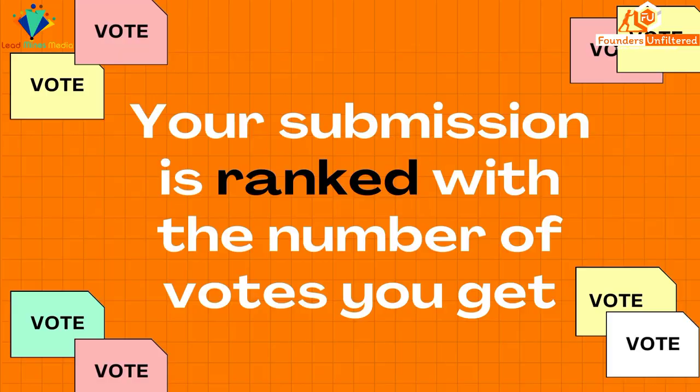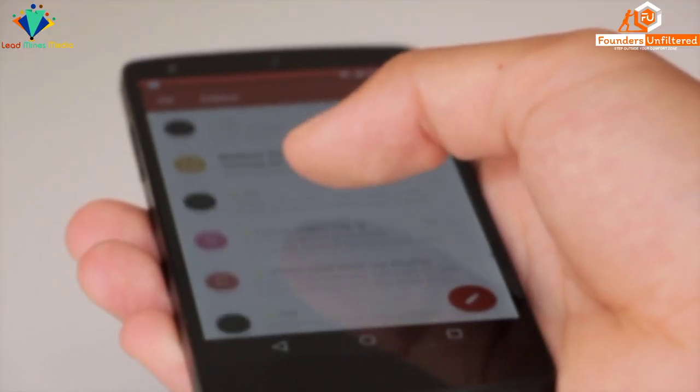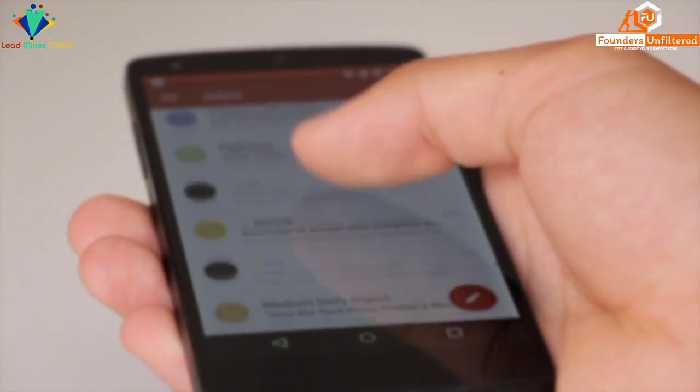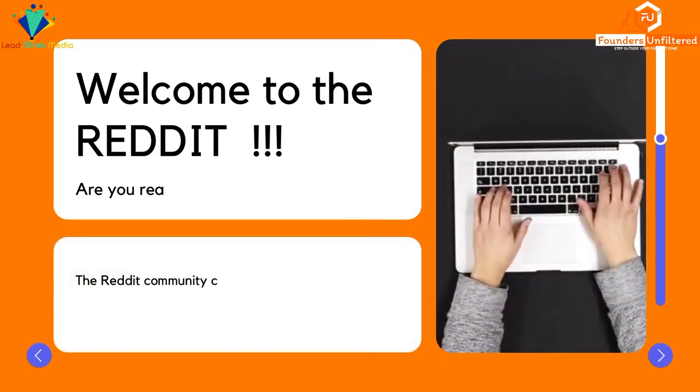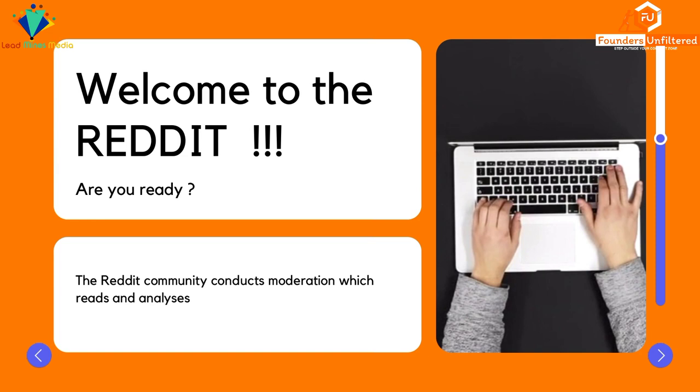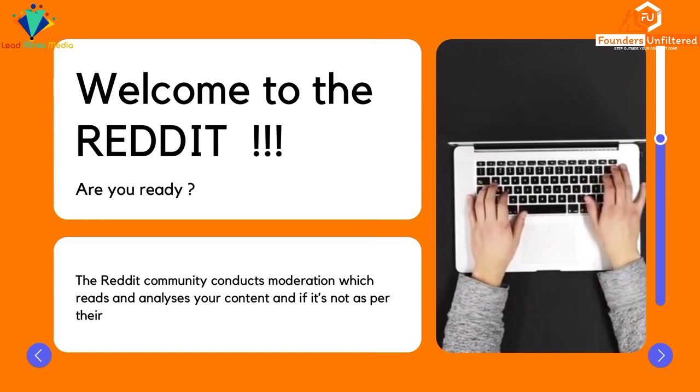They can also appear on the site's front page if they get way more votes than expected. The Reddit community conducts moderation which reads and analyzes your content, and if it's not as per their community guidelines, they can remove it as well.